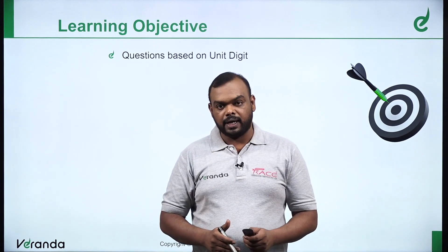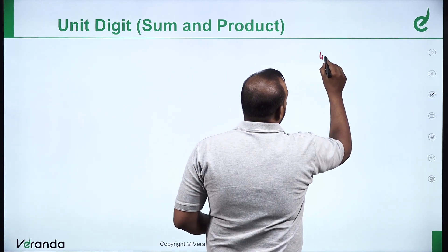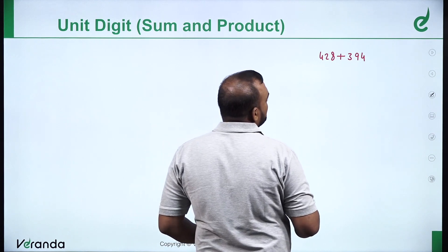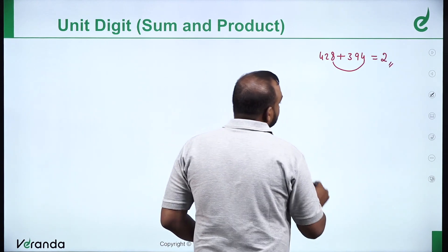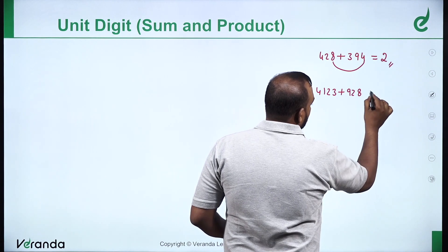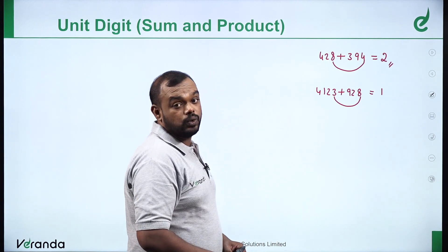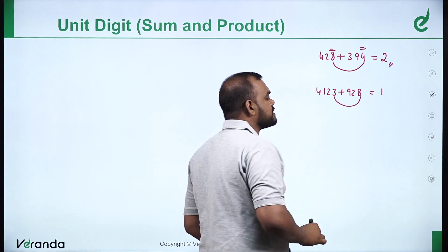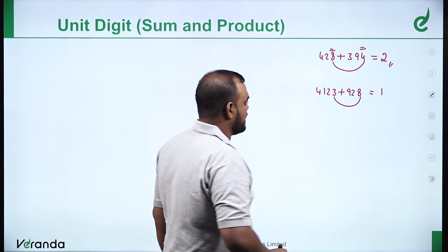Now I am going to show 428 plus 394. When you are adding two numbers or three numbers, it does not matter - the unit digit of the sum always depends only on the unit digits of the numbers. The sum depends on the unit digits. That is the same thing.